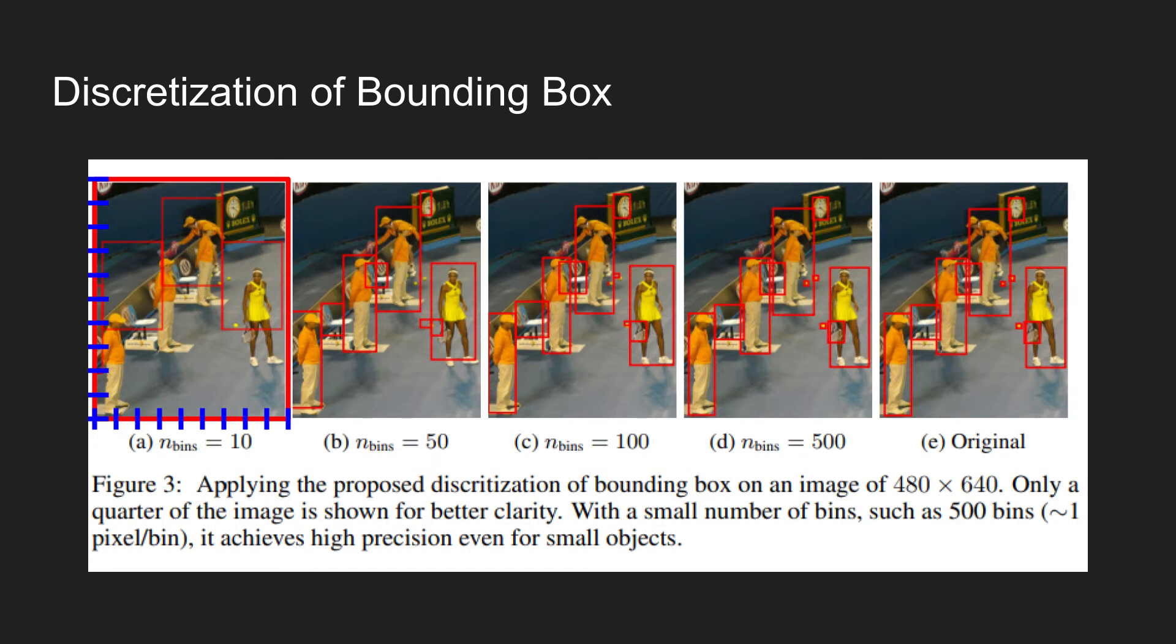The tokens used to represent the bounding box will then be something like in x-direction x1, x2, x3 to x10, and in y-direction we could use 10 bins, so y1, y2, y3 to y10. So using only 10 tokens we can represent the coordinate of an object.